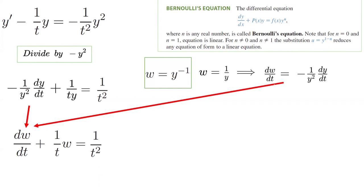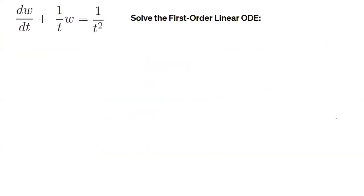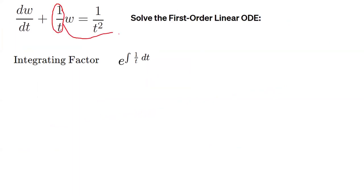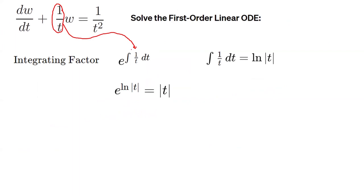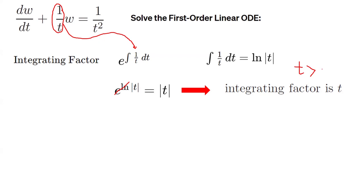This is now a first-order linear differential equation, which we know how to solve — we just need to find the integrating factor. The integrating factor is e to the integral of (1/t) dt. The coefficient of w is the integrand. The integral of 1/t dt is ln|t|, so it becomes e to the ln|t|. Since e and ln are inverse functions, this simplifies to |t|. Assuming t is positive, the integrating factor is simply t.